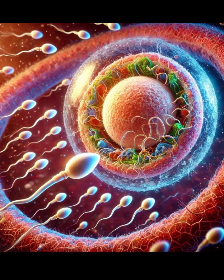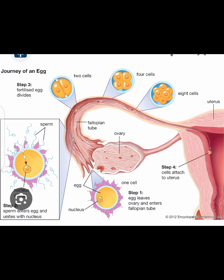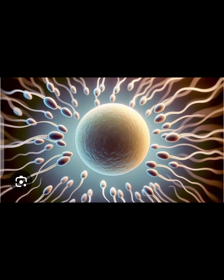A sperm cell has three main parts. Head: contains the nucleus holding genetic material, and the acrosome packed with enzymes to break through the egg's barriers. Midpiece: contains mitochondria, which provide energy for movement. Tail, or flagellum: propels the sperm forward.